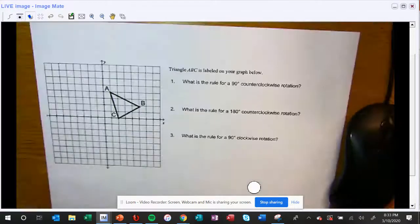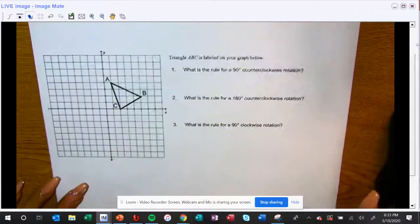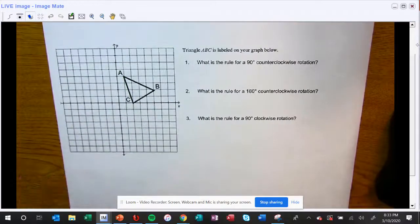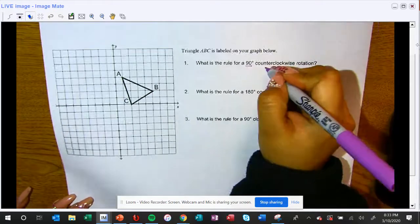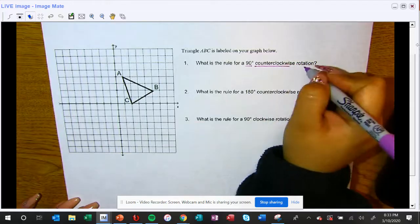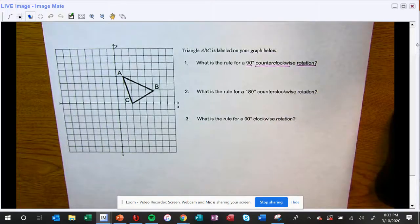In this particular problem, triangle ABC is labeled on your graph below. It asks what is the rule for a 90 degree counterclockwise rotation. They want to know what is the rule for a 90 degree counterclockwise rotation.